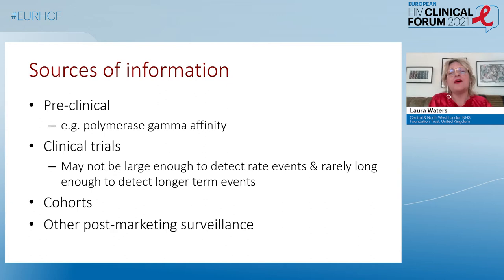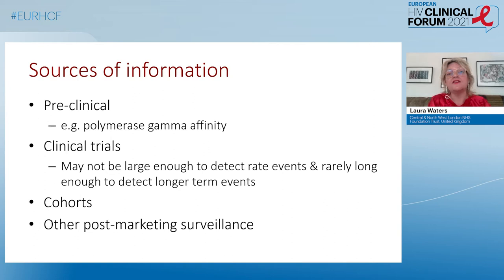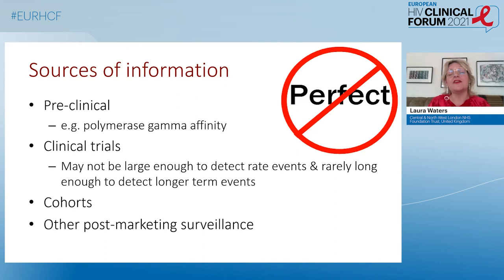With cohorts, of course, we see the biases of confounding — the fact that drivers of whether someone's on treatment A or treatment B may also drive differences in toxicity rates. And there is post-marketing surveillance using the various reporting systems that regulatory authorities provide. None of these are perfect; they all have limitations, and often we need to use these different sources of information as jigsaw pieces to try and create a whole picture, but we are still often left with gaps.